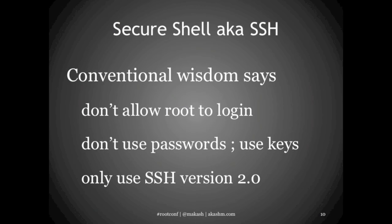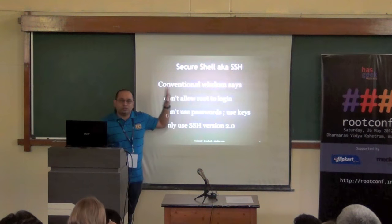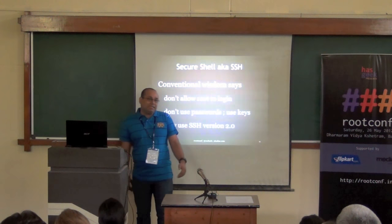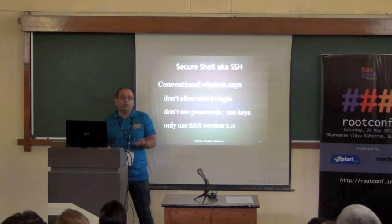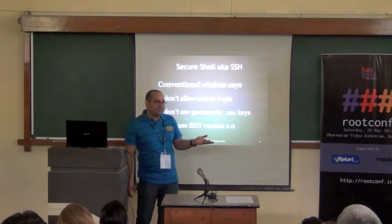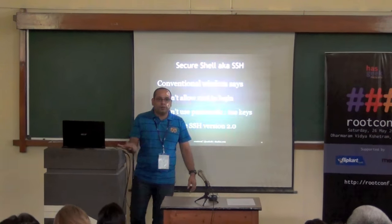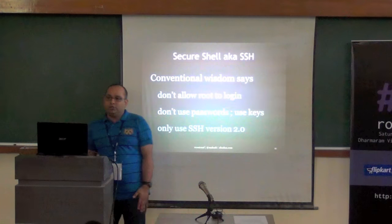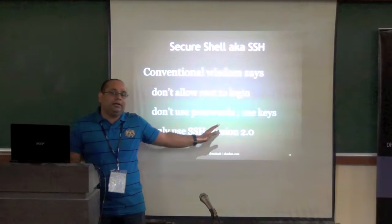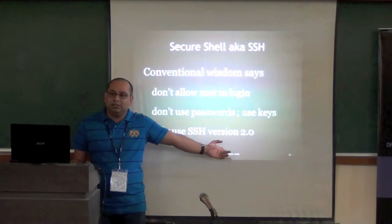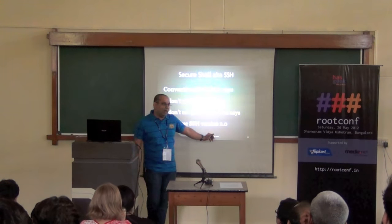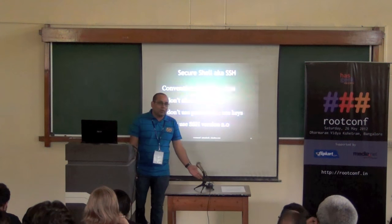The conventional wisdom you will find when you Google 'securing SSH' is: don't allow root to login (there's an option for that in sshd), don't use passwords — use keys (Amazon EC2 by default has no password access; you generate a key pair and use a .pem file). Only use SSH version 2.0. Some old Cisco routers still run SSH version 1.0, which has known standard attacks.